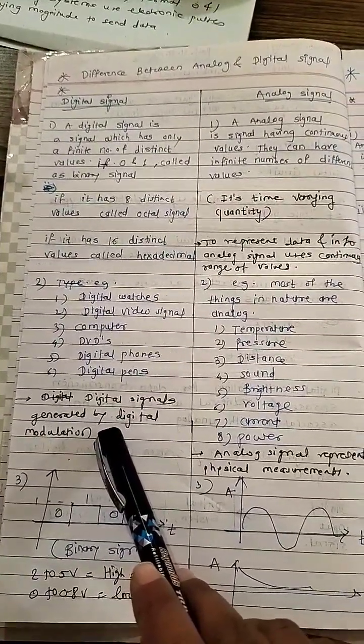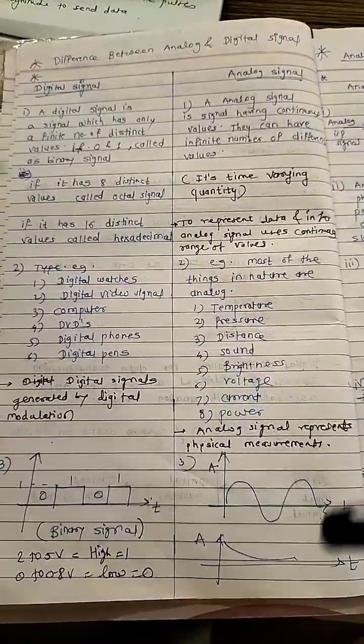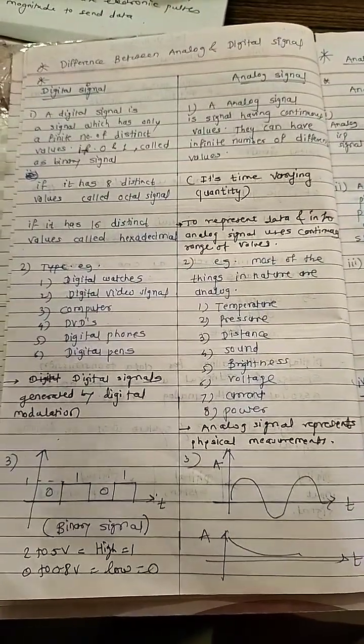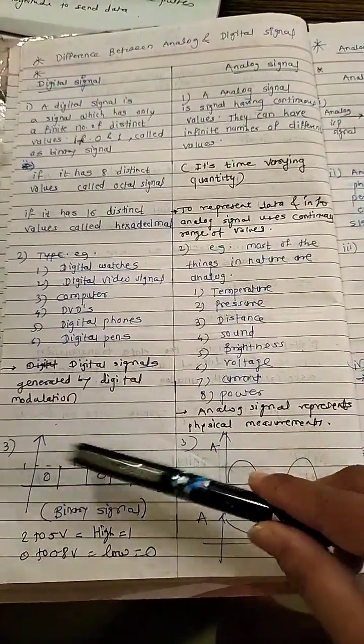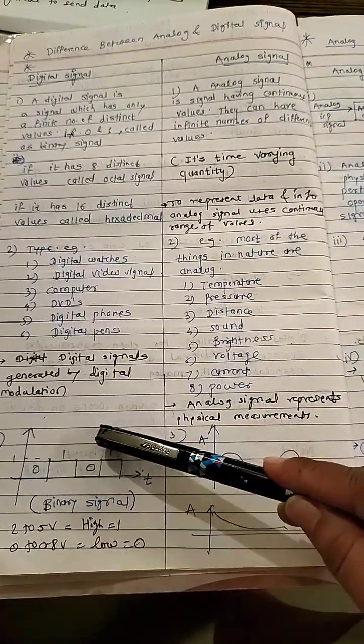So basically this is about analog signal and digital signal. The main difference here is that digital signal is more accurate than analog signal and is discrete in nature, while analog signal is continuous in nature.